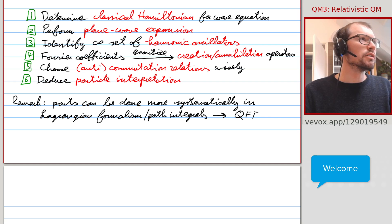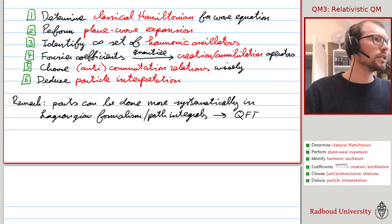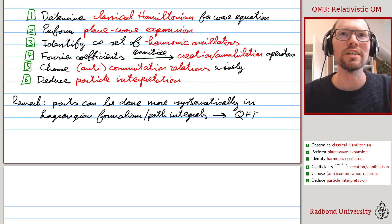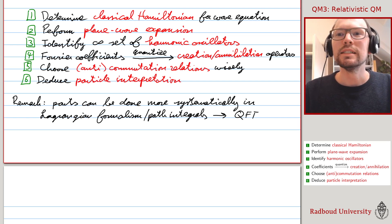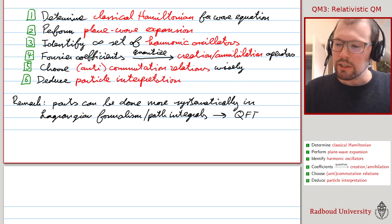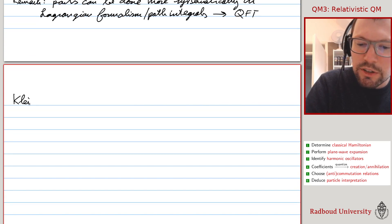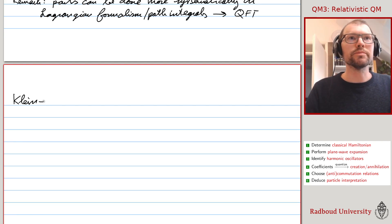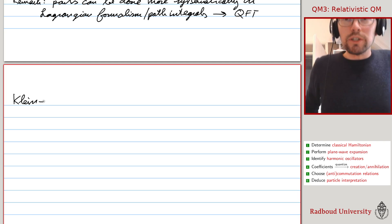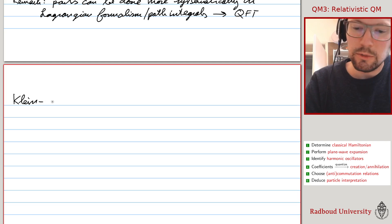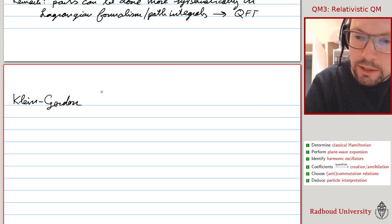Since we'll be revisiting these steps a couple of times, it's useful to record them. I've put a list on the side so I don't have to repeat the steps each time. We're going to start with the Klein-Gordon equation, since that is arguably the simplest and most analogous to the electromagnetic field equations, as we're dealing with integer spin.